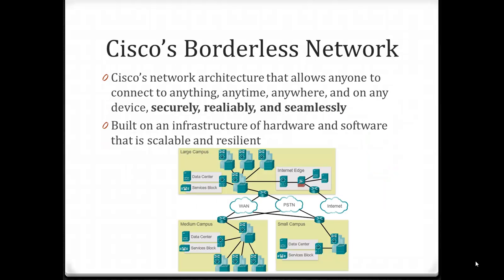Cisco has a vision of a converged network known as their borderless architecture. Cisco's borderless architecture allows anyone to connect to anything, anytime, anywhere, on any device. But more importantly, all of these connections are going to be secure, reliable, and seamless.